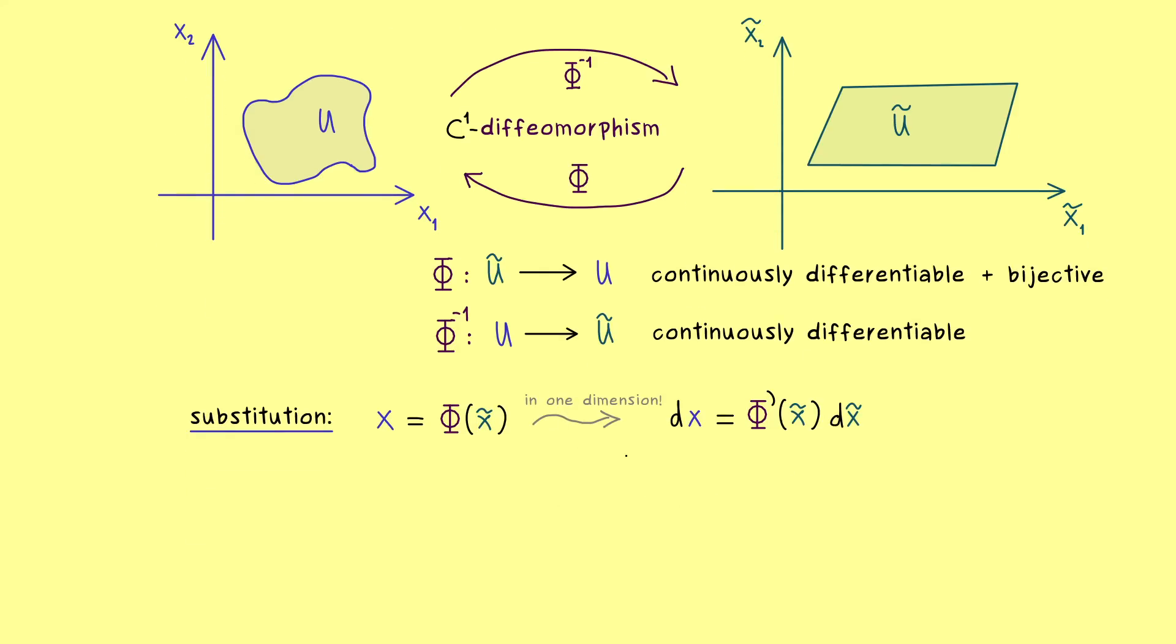The only thing we have to keep in mind is that the derivative of phi is more complicated in higher dimensions. But as you already know, we can use the so-called Jacobian as a replacement. And there the common notation is to write J with index phi. And then we also evaluate that at the point x tilde. And this is already almost the substitution as we wanted.